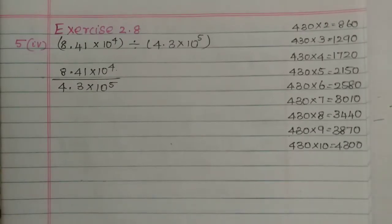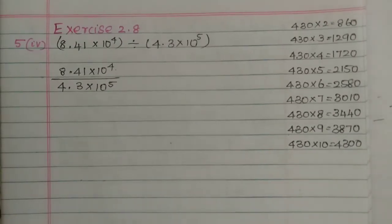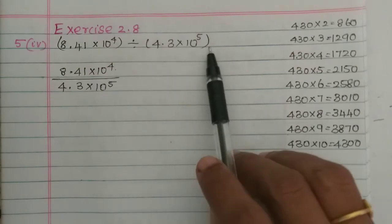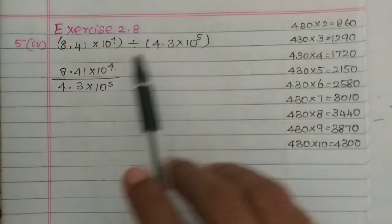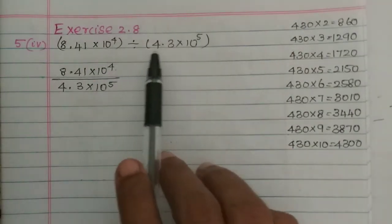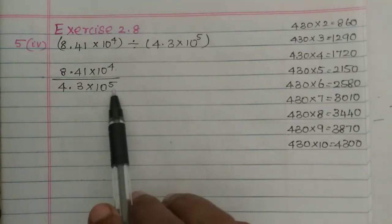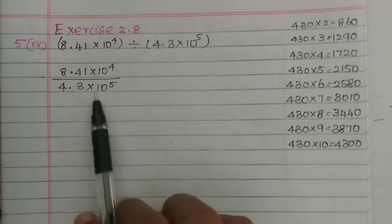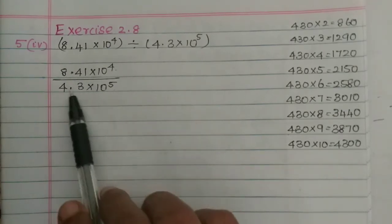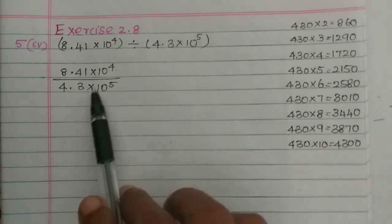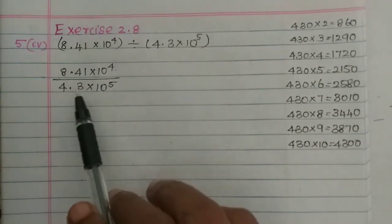Hi students, in this video exercise 2.8, 4th subdivision: 8.41 into 10 power 4 divided by 4.3 into 10 power 5. So we have 8.41 into 10 power 4 divided by 4.3 into 10 power 5.